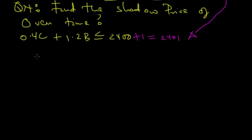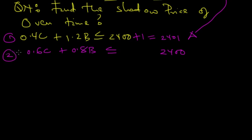So our challenge is to find the new optimal point by solving the new equation for oven time with the equation for mixing time, and we do that by solving simultaneously. So I'm just going to write down the equation for mixing time which is 0.6C plus 0.8B which should be less than or equal to 2,400. So we have two equations, equation one and equation two. What we do is try to find the intersection of those two lines by solving simultaneously.